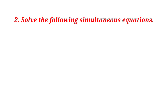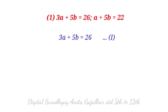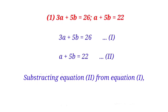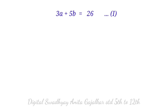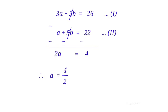Solve the following simultaneous equations: 3a plus 5b equal to 26 (equation first), a plus 5b equal to 22 (equation second). Subtracting gives 2a equal to 4. Therefore a equal to 4 divided by 2, so a equal to 2.